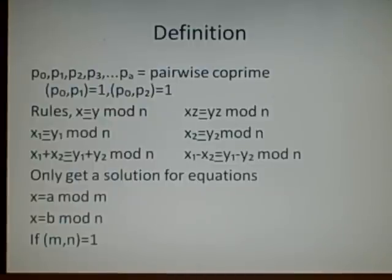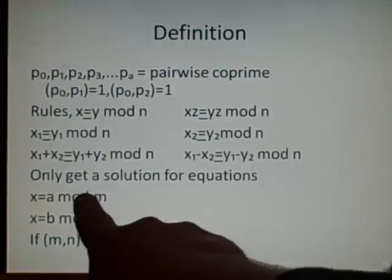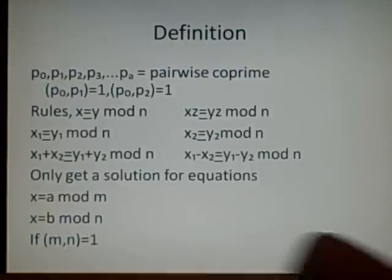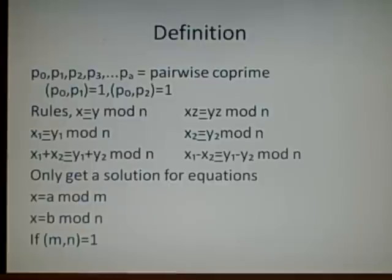And we can only get a solution with the Chinese remainder theorem if we have x is a mod n, x is b mod n, if these two here, the highest common factor is 1. Okay, so if they're pairwise co-prime.